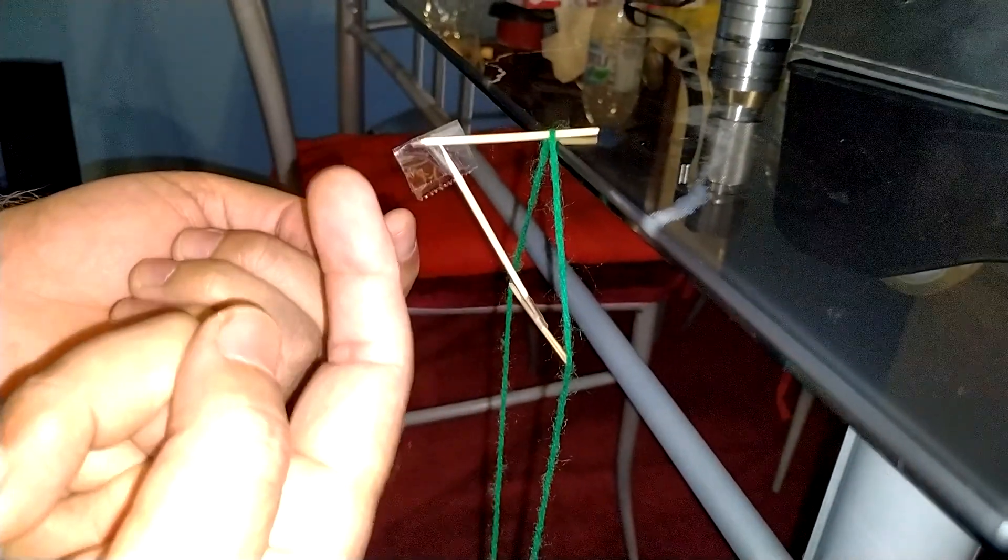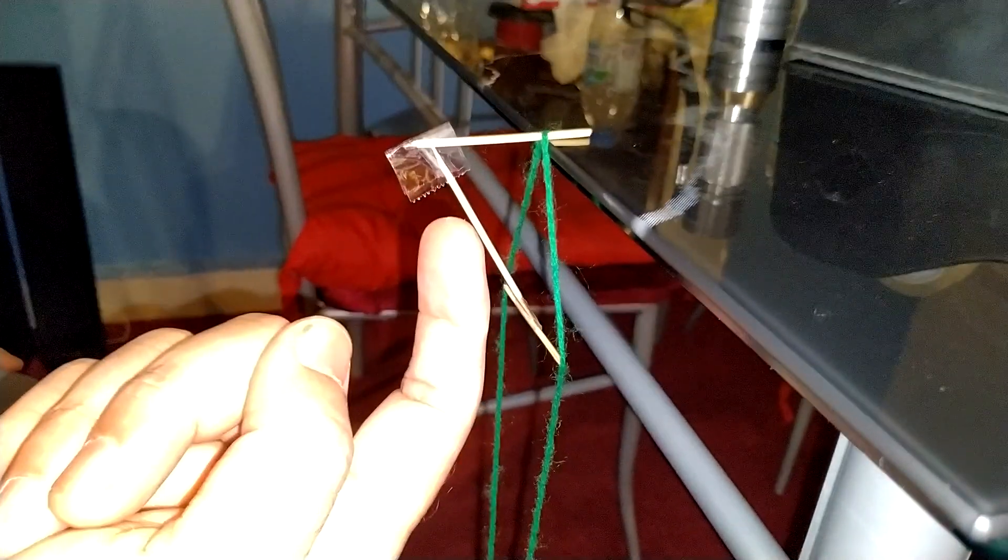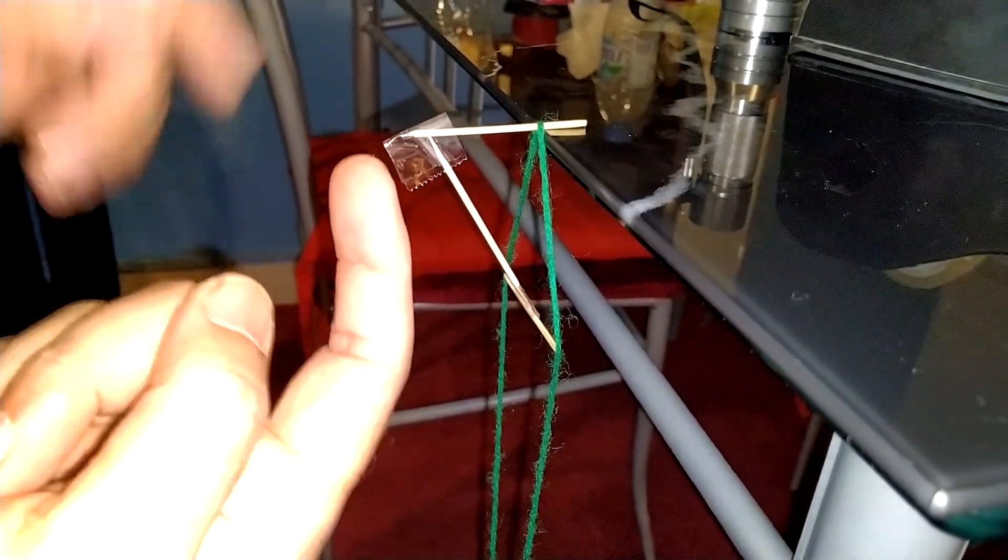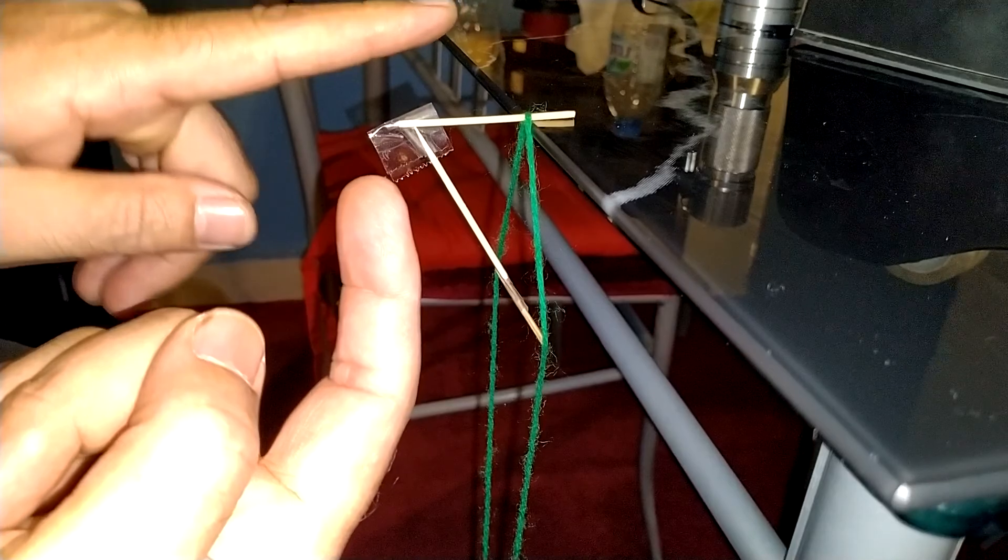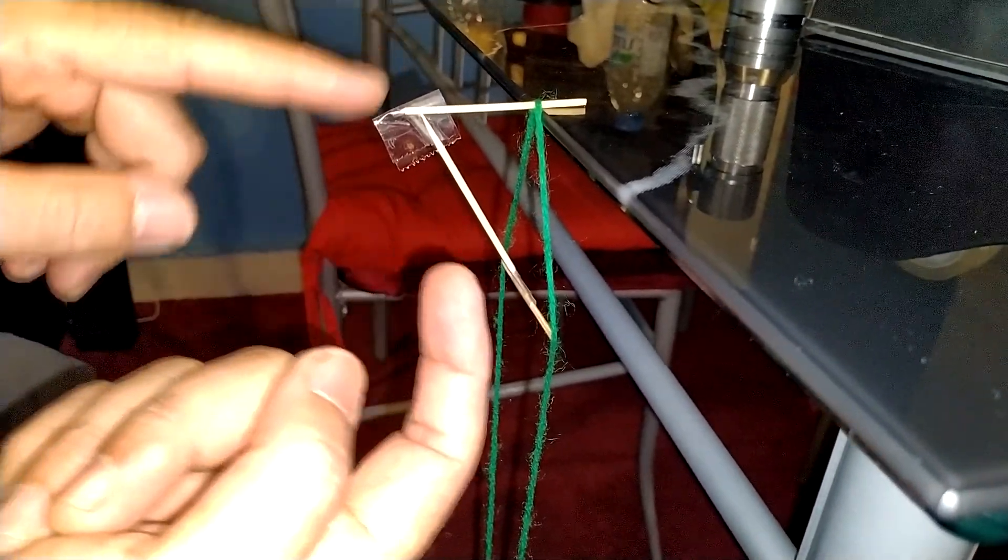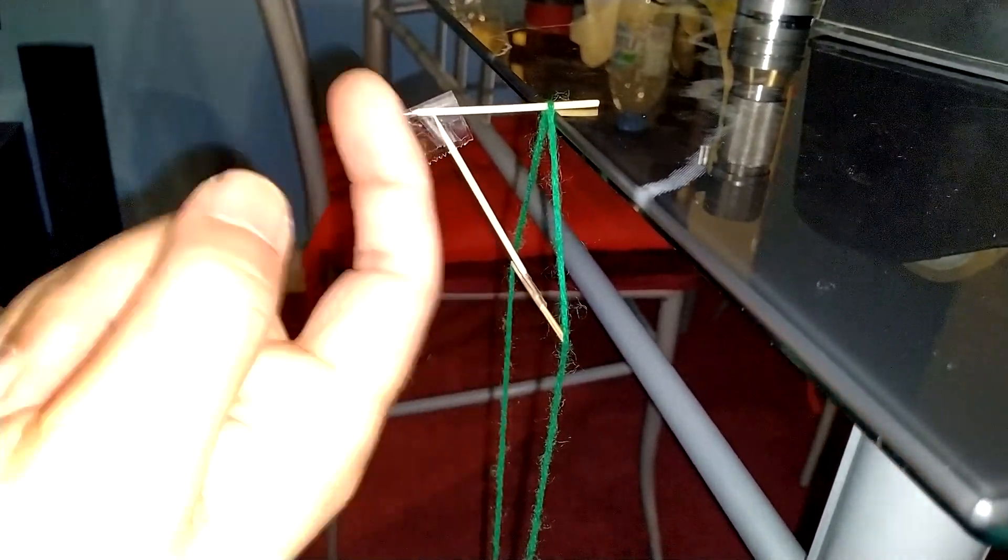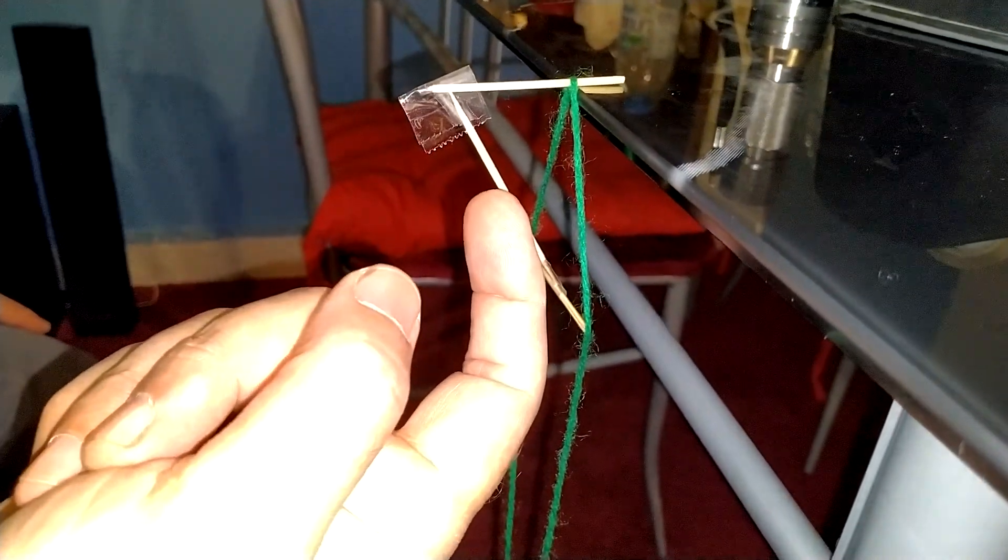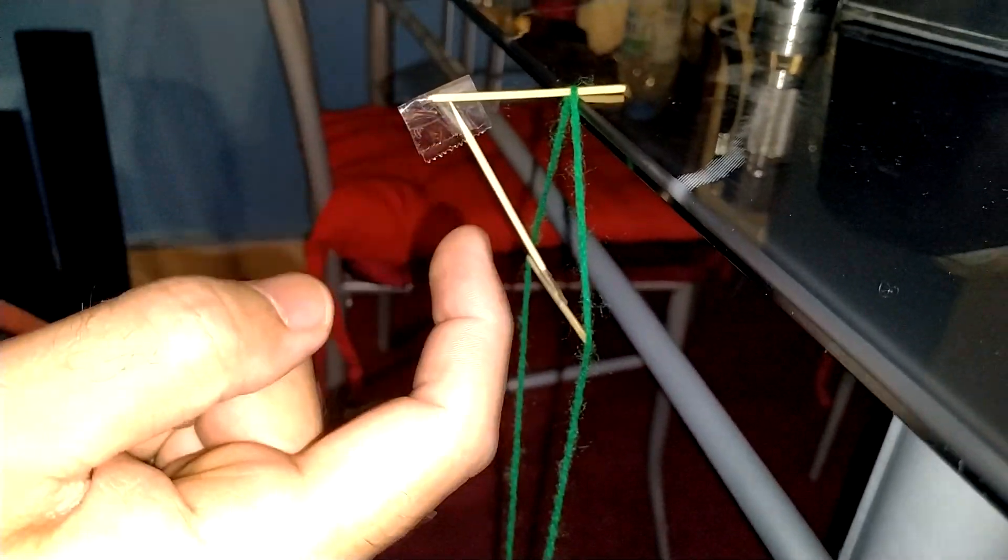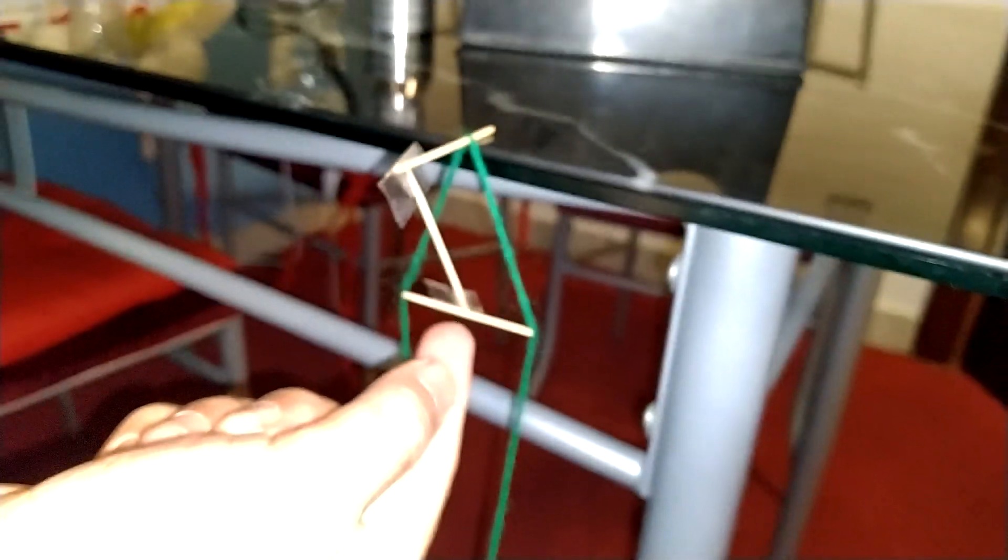This stick is giving a push upwards so that this horizontal stick is not coming down. Now, this upward thrust provided to this stick is given from here, and how is it stable?